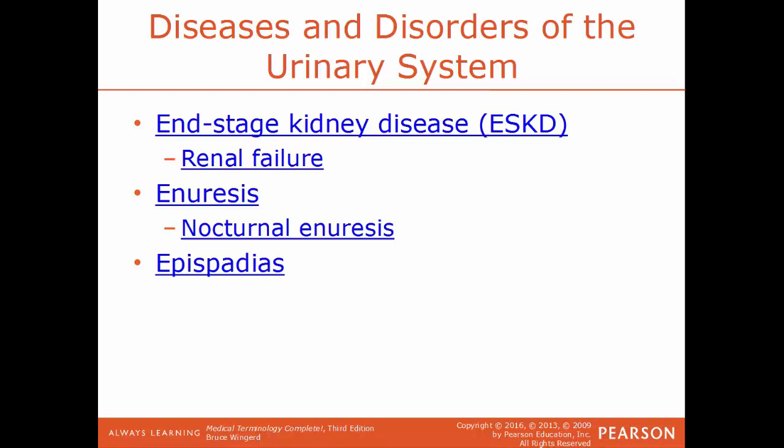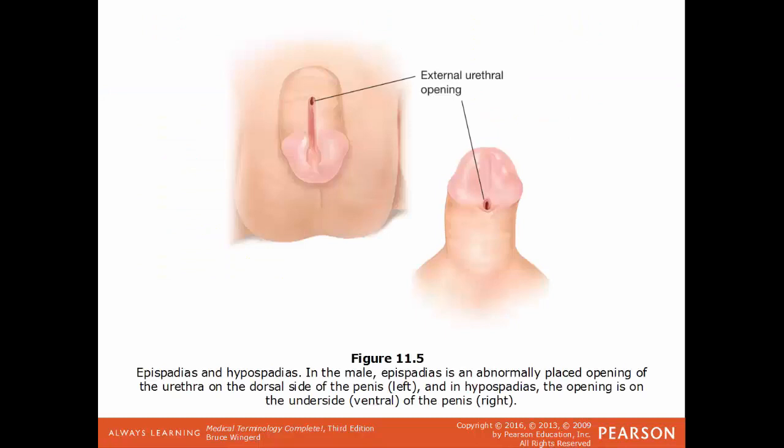Epispadias is a rare type of malformation of the penis where the urethra, instead of being on the very tip of the penis where it normally is found, is found on the upper aspect of the penis. This can also be found in females, where the urethra develops too far forward or anteriorly. Instead of the urethra being at the tip, it is found on the upper aspect of the penis, or the dorsum.